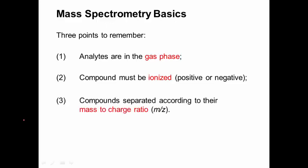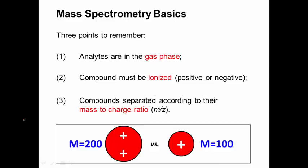And lastly, a mass spectrometer will measure or will separate compounds according to the mass to charge ratio. So it's not just the mass, we also have to deal with their charge.